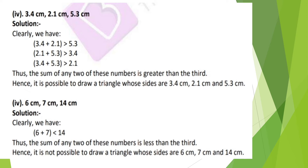Next question: 6 cm, 7 cm, and 14 cm. We have 6 + 7 = 13, but 13 is less than 14. As we know, any two sides of a triangle must be greater than the third side. Here, the sum of the two sides is lesser than 14, so it is not possible to draw a triangle with these measurements.